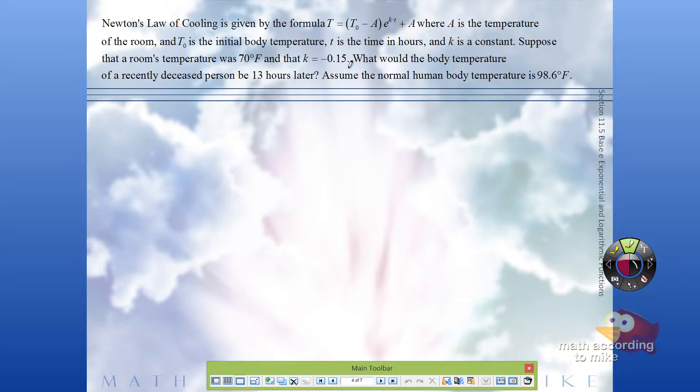Notice it's saying what would the body temperature be of a recently deceased person 13 hours later. That means find big T. Well, luckily for us, big T is already solved for in our formula because it's already by itself, so we just have to put the numbers in.